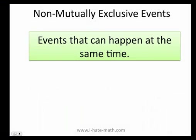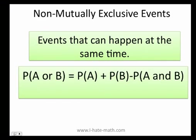First of all, what is a non-mutually exclusive event? When you have two events that can happen at the same time, they're actually non-mutually exclusive. The formula is P(A or B), and the probability of A or B happening equals the probability of A plus the probability of B minus the probability of A and B happening at the same time.